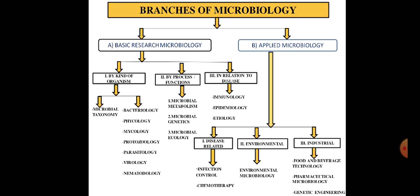The second main branch is applied microbiology, classified into three branches: disease-related, environmental, and industrial. The disease-related branch includes infection control and chemotherapy. The environmental branch covers environmental microbiology. The industrial branch is divided into food and beverage technology, pharmaceutical microbiology, and genetic engineering.